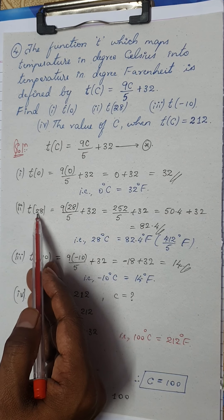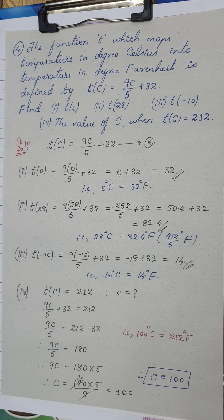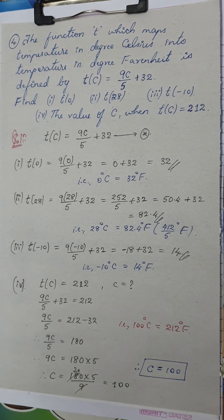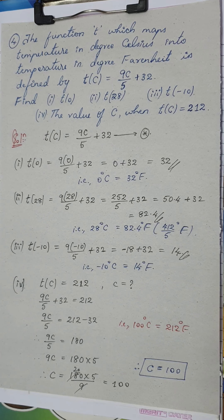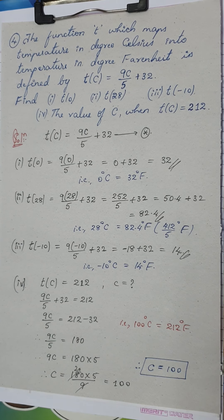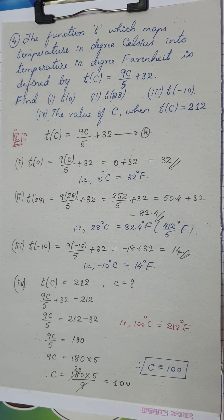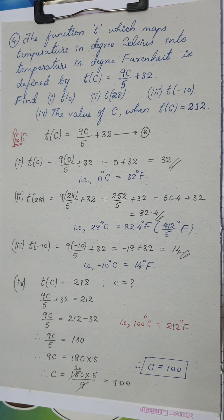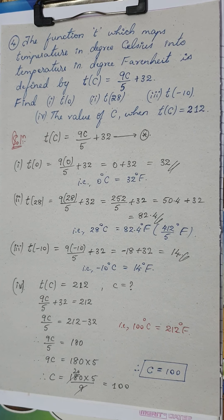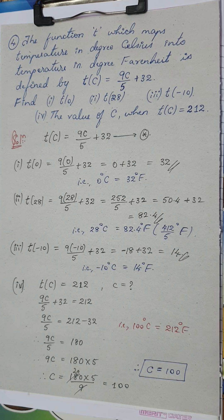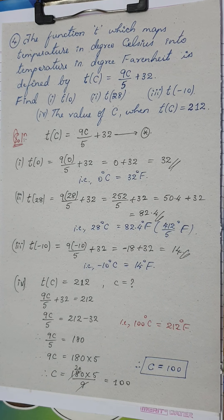It is a reverse process: your degree Celsius was given and you found Fahrenheit; your Fahrenheit was given and you found Celsius. This concludes the solution for the last question. We have solved all the questions from Exercise 2.3. The next video will cover the miscellaneous exercise and a few more questions from this chapter, which will conclude the entire chapter of Relations and Functions.